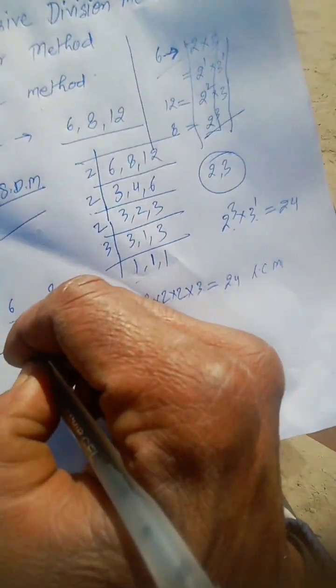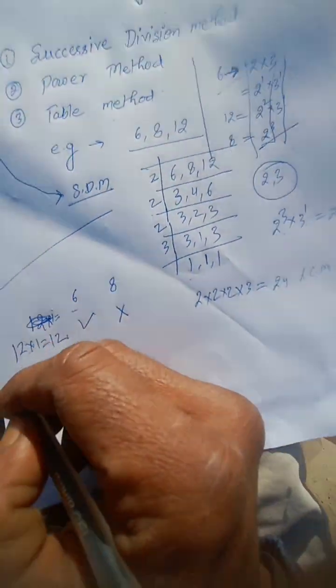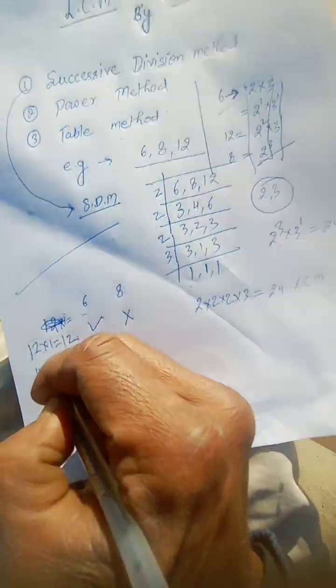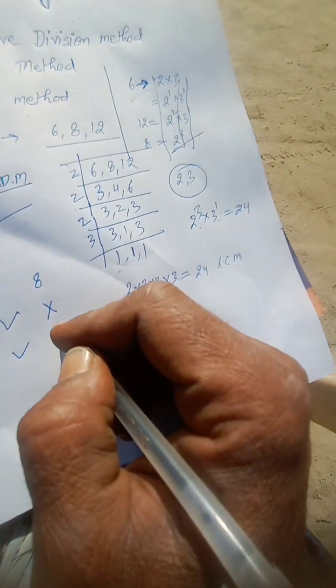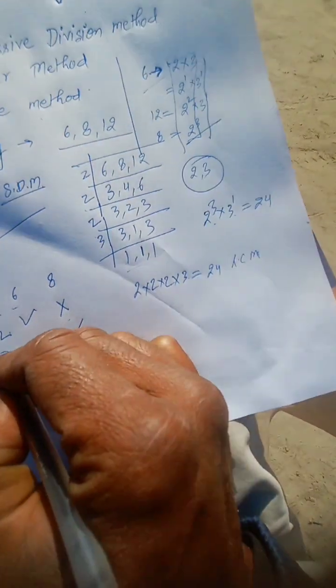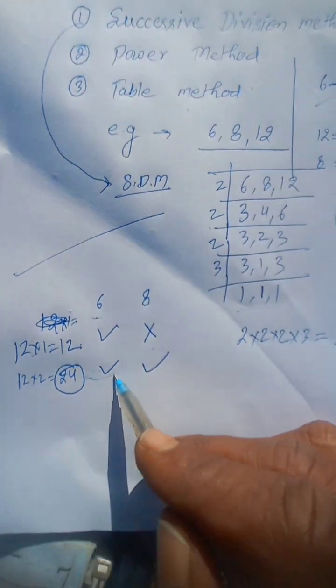12 × 1 = 12, only 6 can divide, not 8, so this will not be LCM. Now 12 × 2 = 24. 6 can divide and 8 can divide, then 24 will be required LCM that you have got from power method and from successive division method.